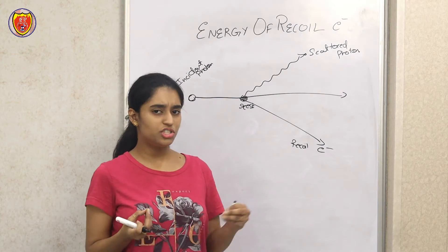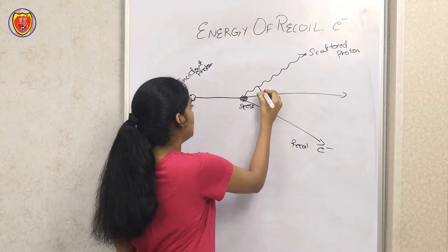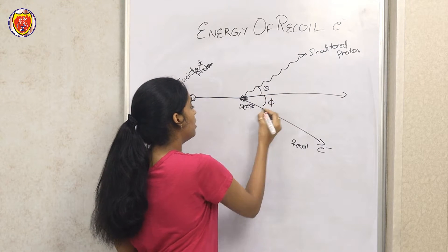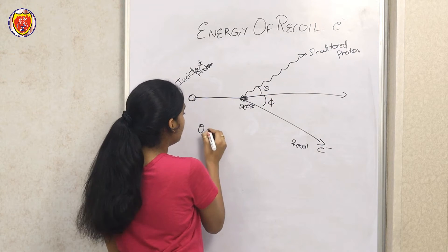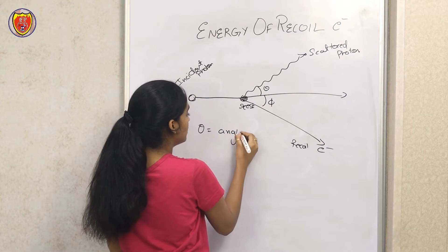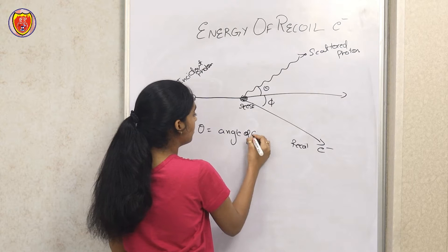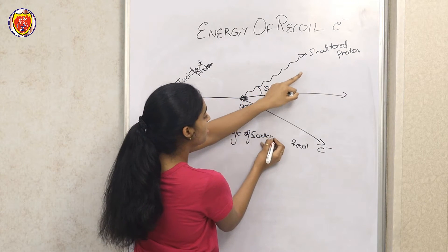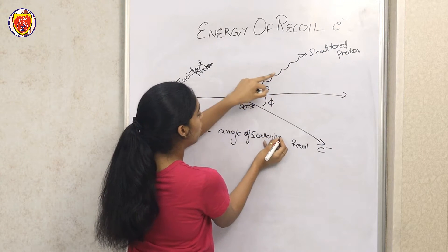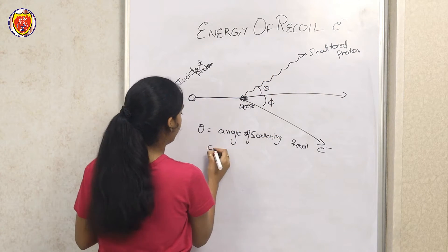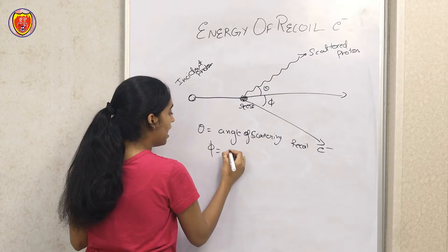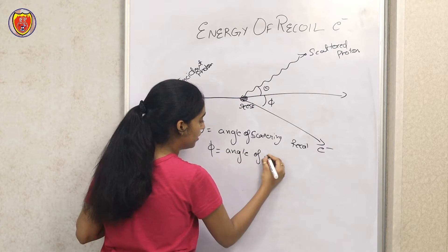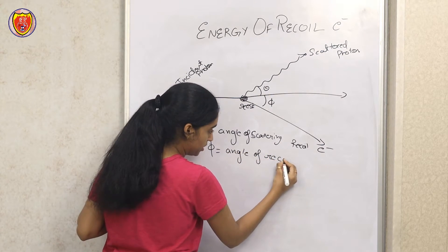We give names to these angles: theta and phi. Theta is the angle of scattering of the photon, and phi is the angle of the recoil electron. So now the main figure should be understood — all derivations follow from this setup.